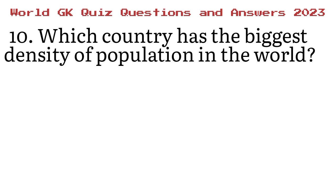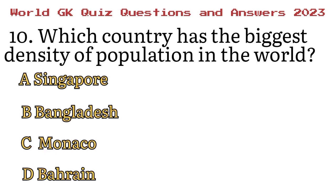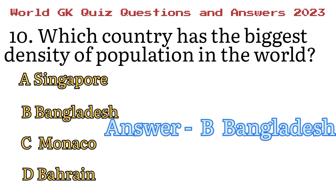Number 10. Which country has the highest density of population in the world? A. Singapore, B. Bangladesh, C. Monaco, D. Bahrain. The answer is B. Bangladesh. Thank you.